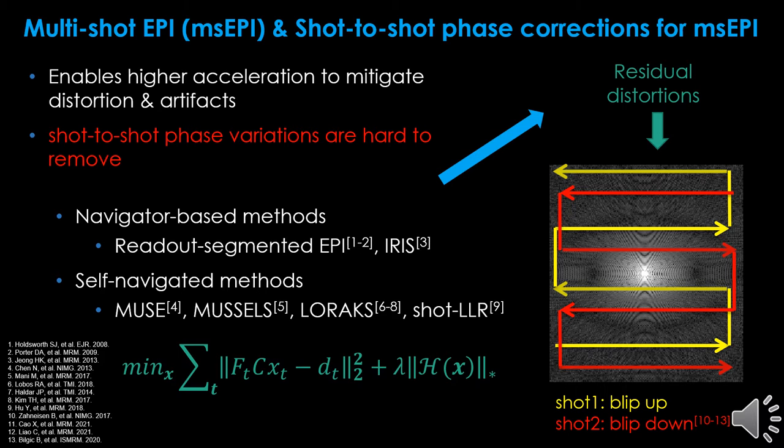To solve the distortion and undersampling issues simultaneously, a multi-shot acquisition scheme was proposed. However, it suffers from shot-to-shot phase variation, which is quite difficult to remove. Therefore, people came up with a variety of shot-to-shot phase correction approaches, which can be divided into two categories: navigator-based and self-navigated methods. All in all, multi-shot techniques didn't eventually solve distortion issues.